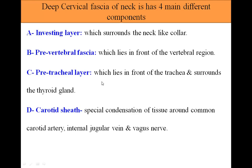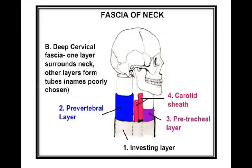The deep cervical fascia of the neck has four main components: the investing layer, which surrounds the neck like a collar; the pre-vertebral fascia, which lies in front of the vertebral column; the pre-tracheal layer, which lies in front of the trachea and surrounds the thyroid gland; and the carotid sheath, which is the special condensation of tissue around the common carotid artery, internal jugular vein, and the vagus nerve. Here you can nicely appreciate these four layers.